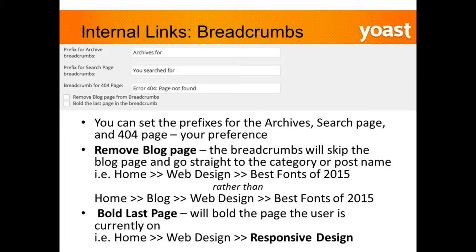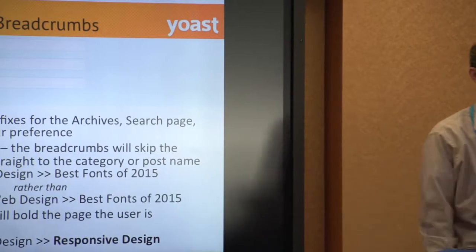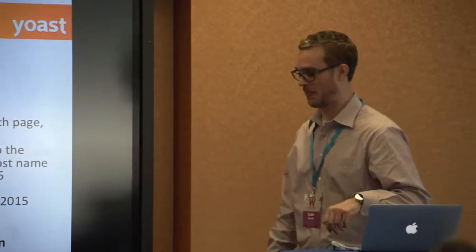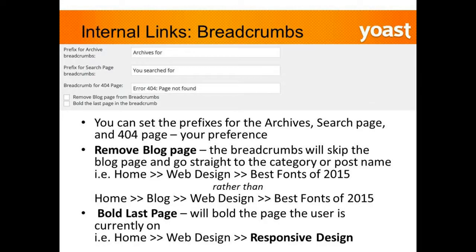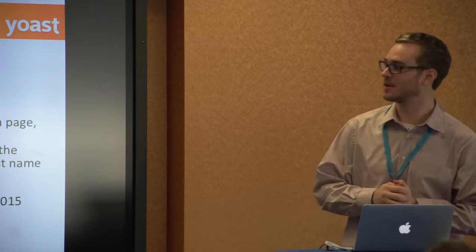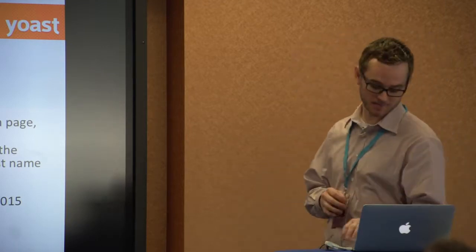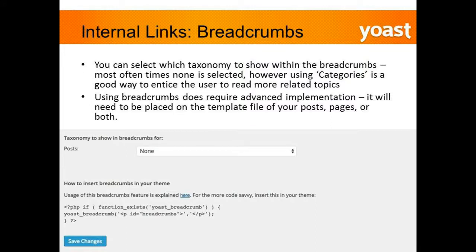As you can see, the difference is: if you have the blog page in breadcrumbs it shows 'Home > Blog > Web Design > Best Fonts 2015'; if you remove it, it shows 'Home > Web Design > Best Fonts 2015.' You can also bold the last page — I typically always check this because it tells you where you are. You can also select which taxonomy to show within breadcrumbs — categories make the most sense if you're going to use this option.